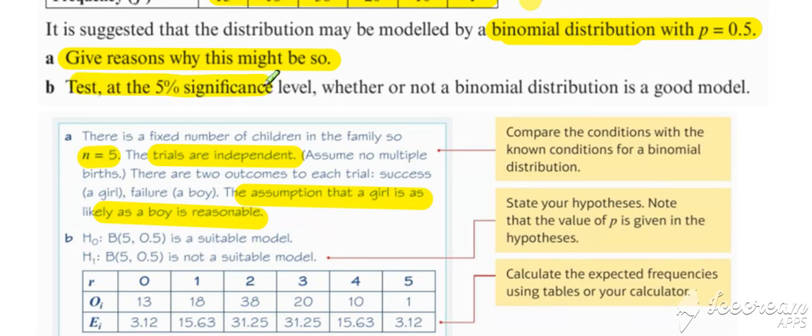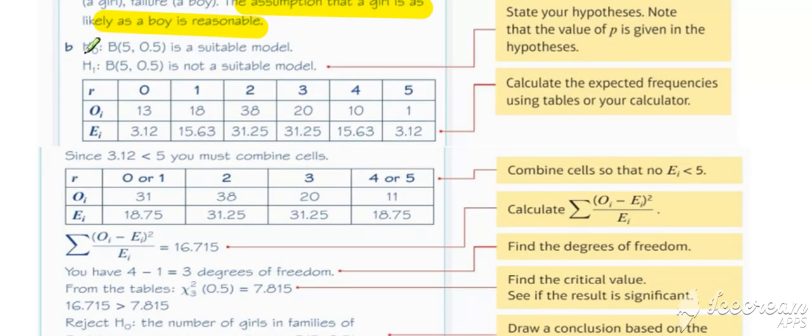Now, going ahead and actually doing the test at the 5% significance level, we proceed as follows. Null hypothesis: the binomial is suitable. So the observed and the expected will closely match. Alternative: not suitable. The observed and the expected won't closely match.